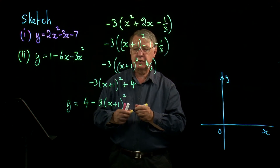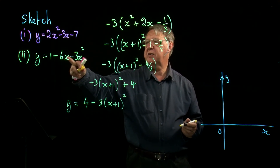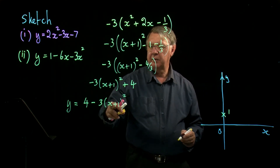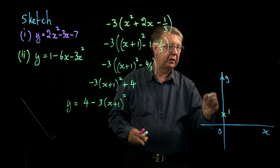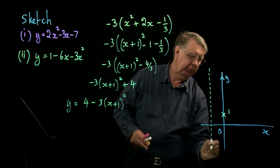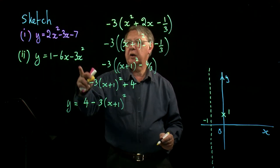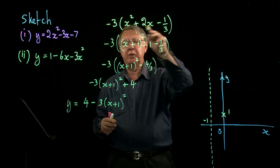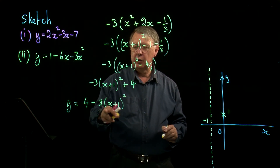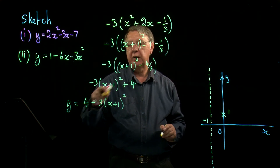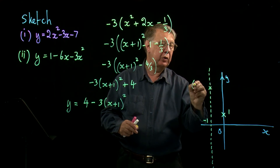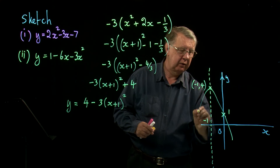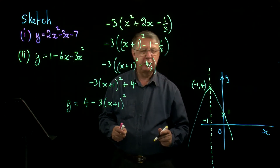So that's the function written in completed square form. Now let's sketch it. The key points: if x is 0, then y is 1, so that's an easy point. Looking at the bracket, if x is negative 1, we get the line of symmetry. Because the coefficient of x squared is negative, the parabola opens downward. When x equals negative 1, the bracket term disappears and we have the highest point, where y equals 4. So the highest point is (−1, 4).